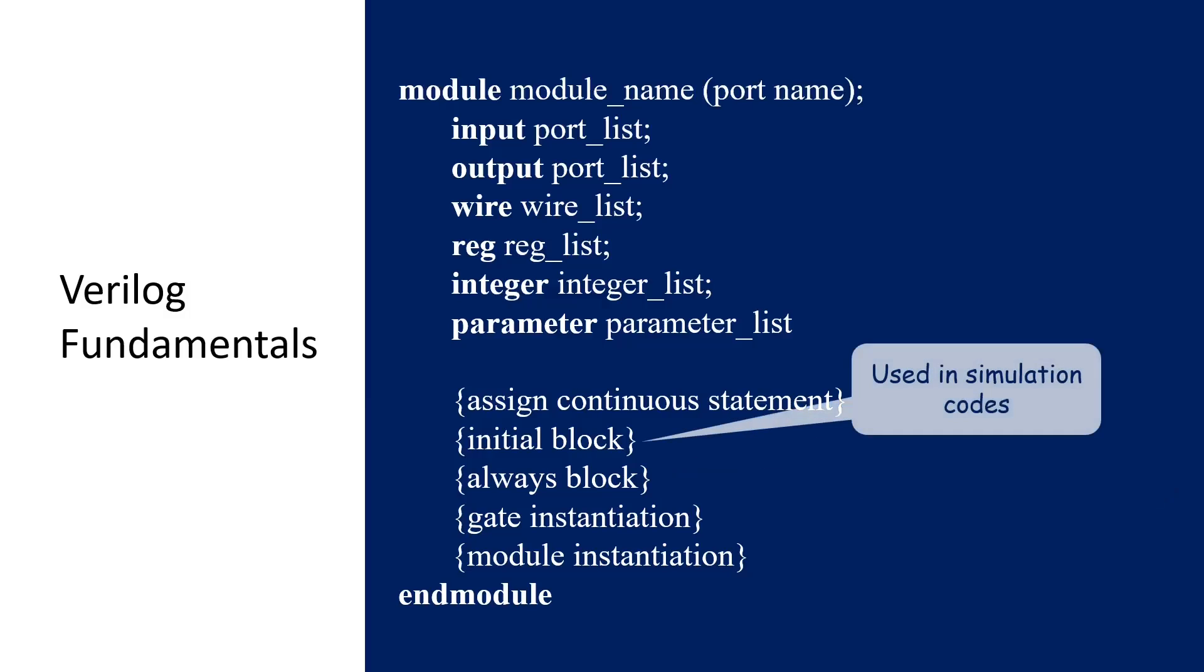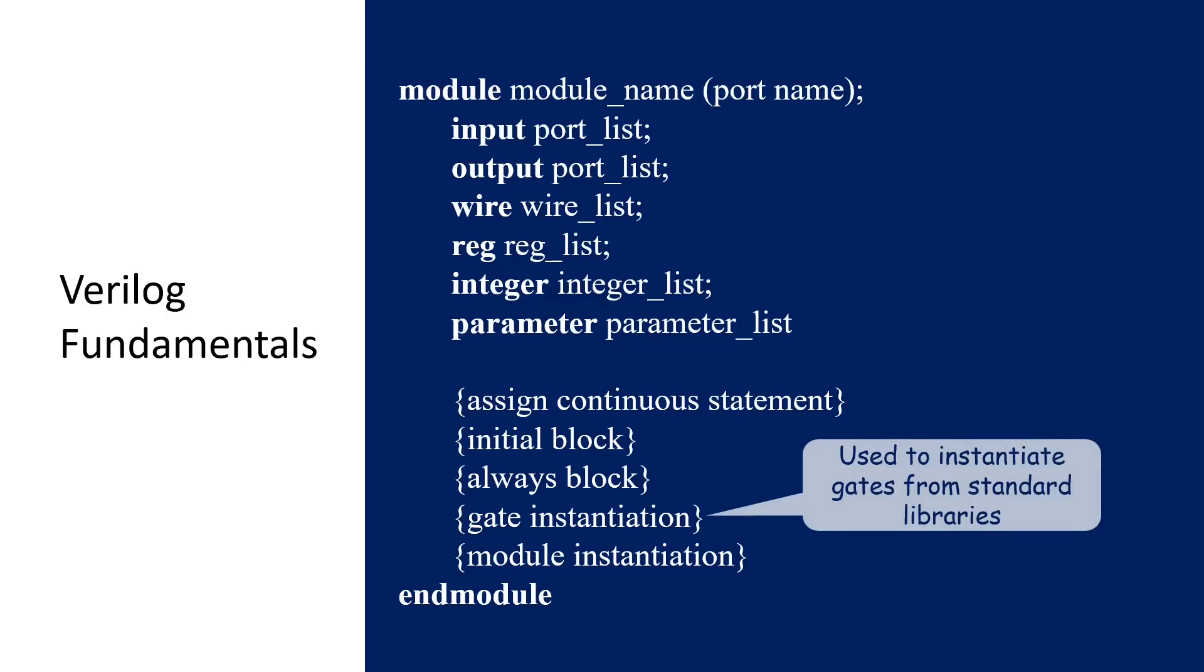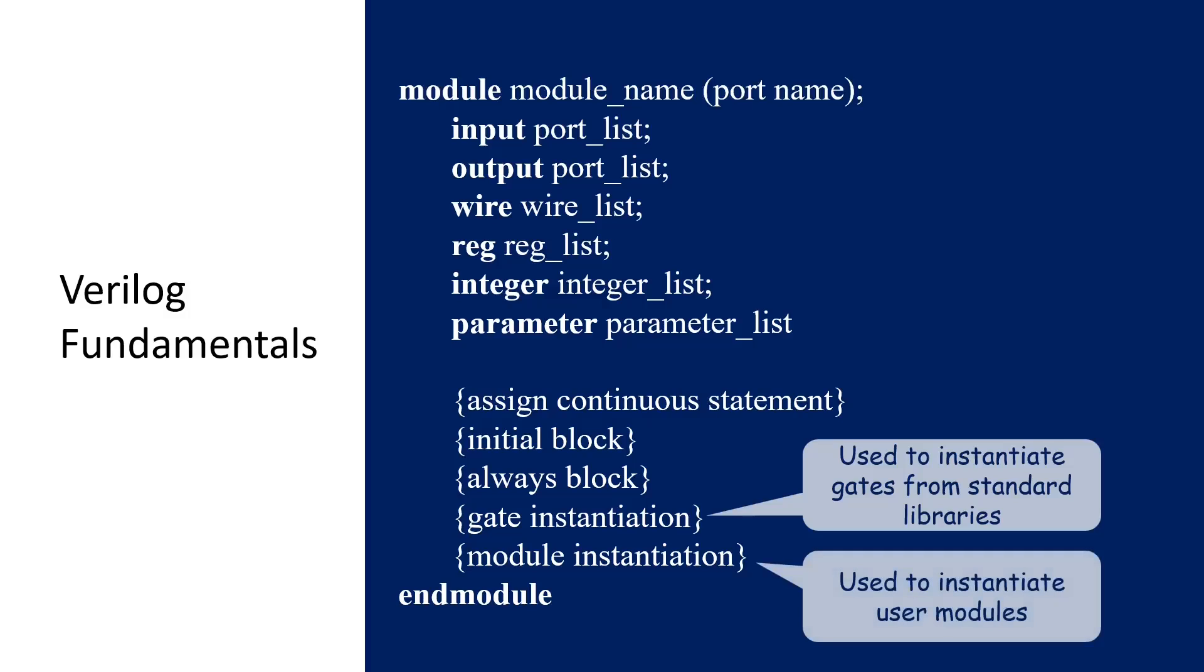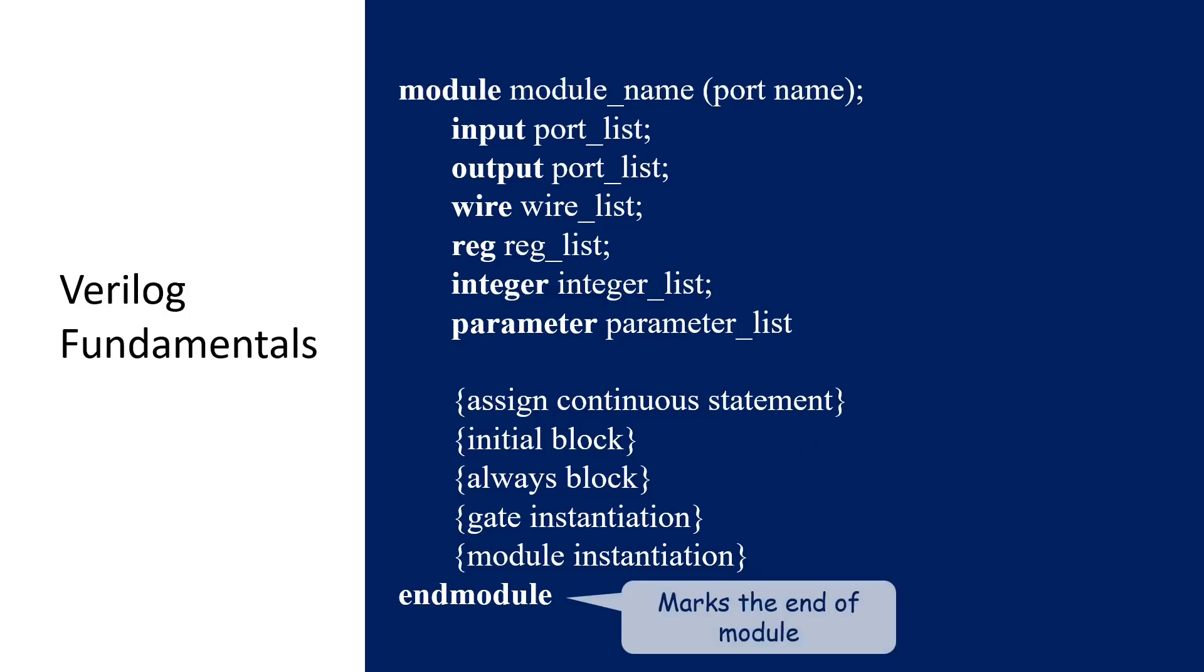In sequential statement, we will have the initial block that will be used in simulation code, and the always block that will be used in modeling the logic. The gate instantiation is used to instantiate the gates from the standard or the user libraries. And the module instantiation is used to instantiate the user module into the top level module. Finally, the endmodule marks the end of the module.